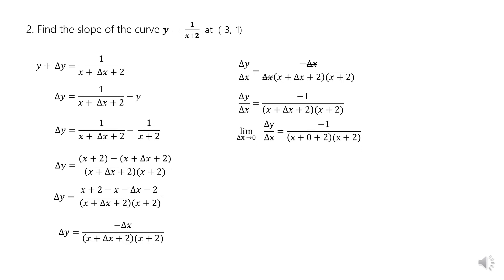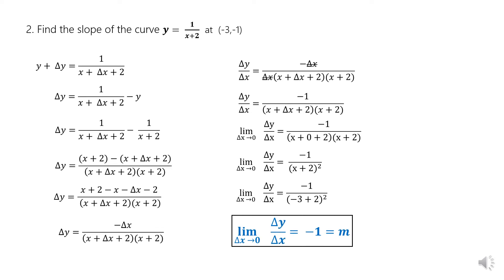As Δx approaches 0, the denominator becomes (x + 2)². So the limit of Δy/Δx as Δx→0 equals −1/(x + 2)². To find the slope at point (−3, −1), substitute x = −3 and simplify. Therefore the limit of Δy/Δx as Δx→0 equals −1, which is the slope of y = 1/(x + 2) at point (−3, −1).